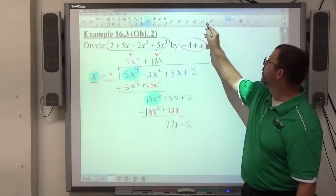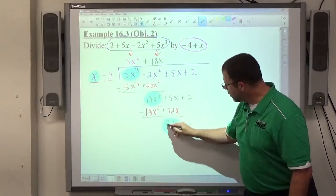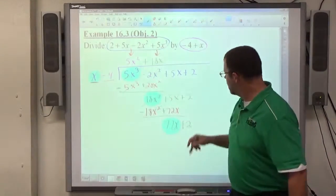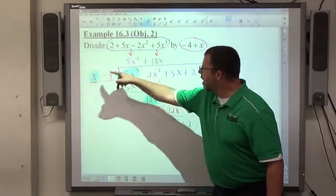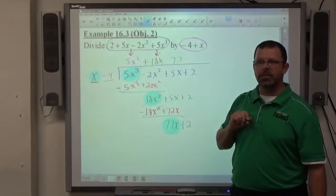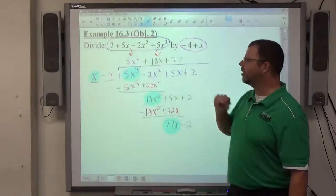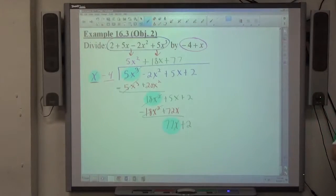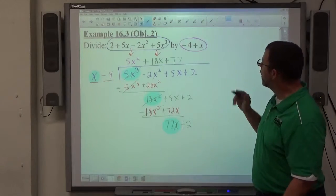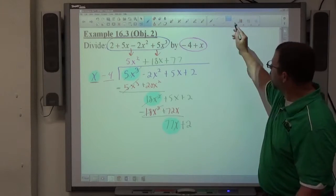First term in the dividend divided by first term in the divisor. 77x divided by x is going to be 77, right? What kind of 77? Plus. Plus 77. Very good. Pluses and minuses are required in the answer every single time. Make sure pluses and minuses always show up. Correct sign based on the division. Multiply. 77 times x is 77x.